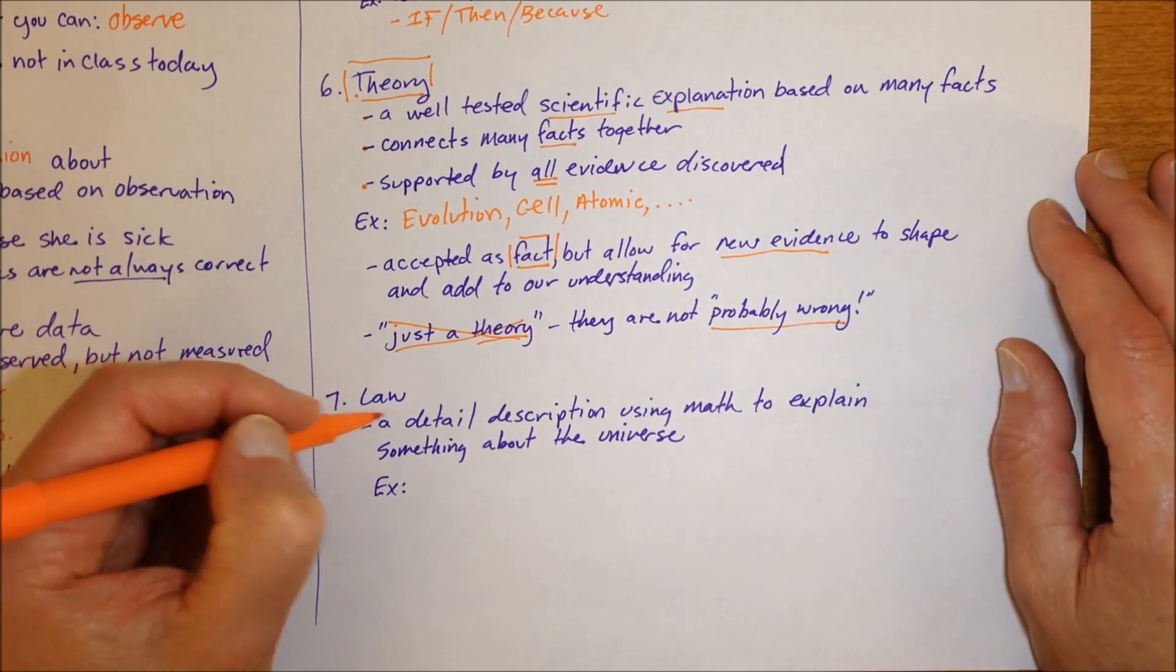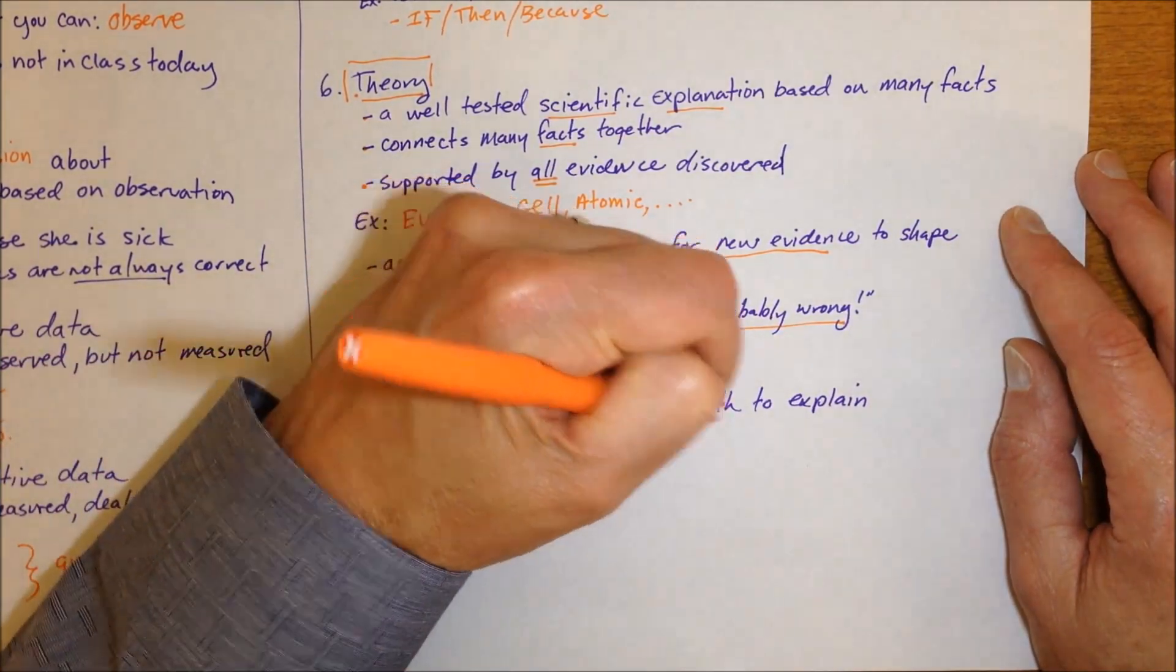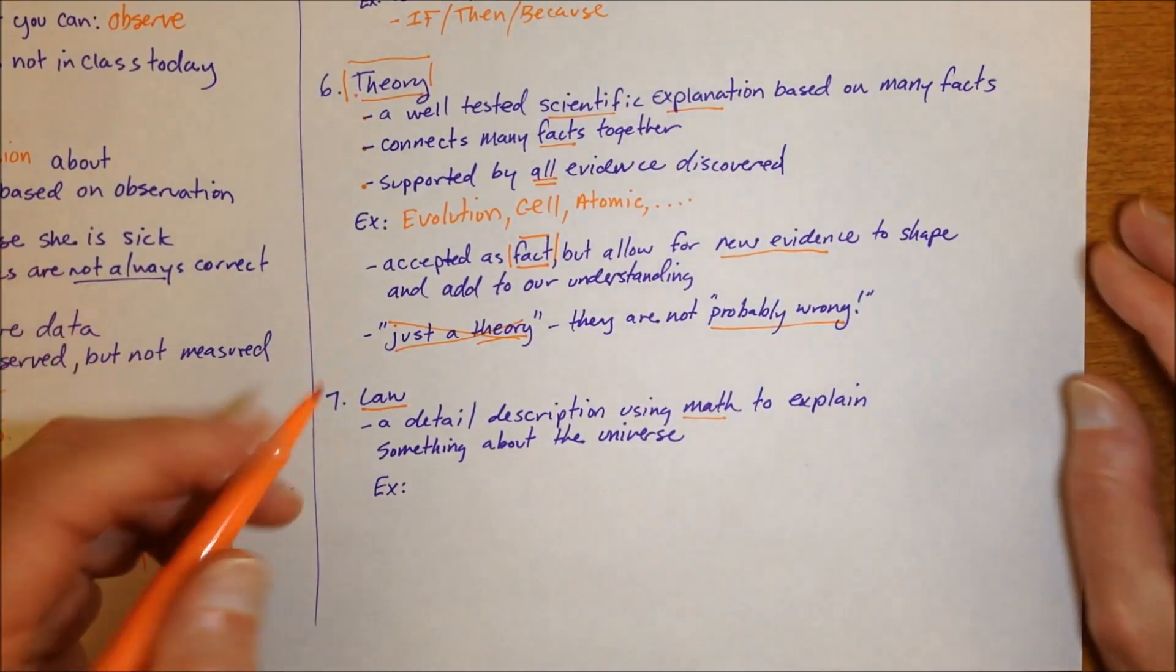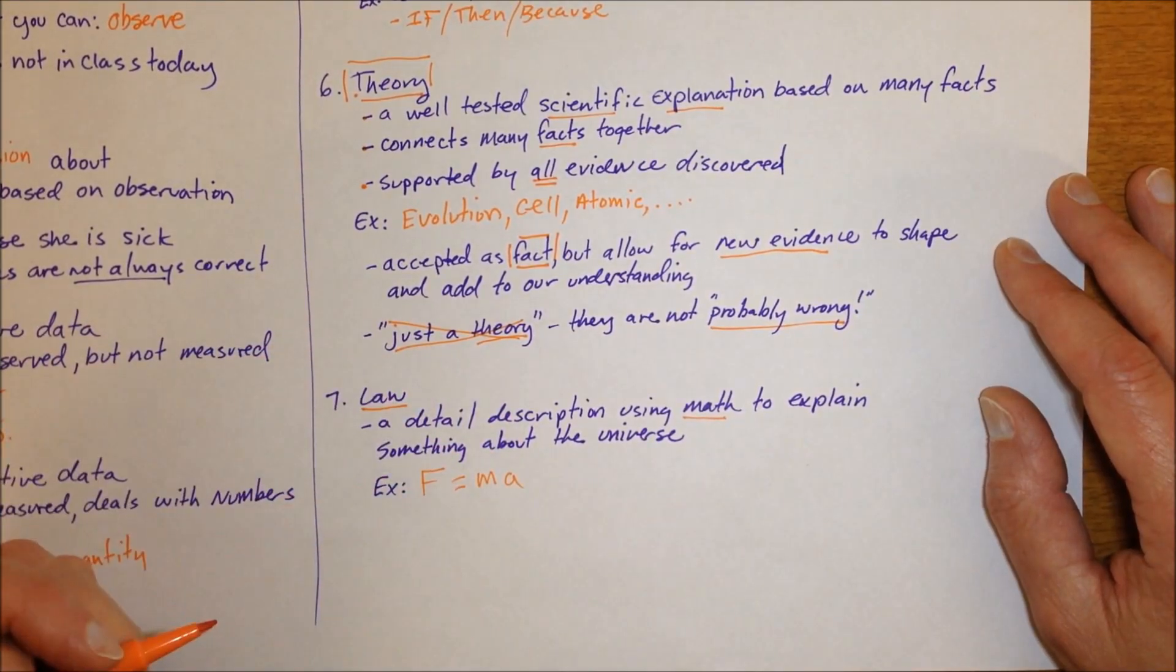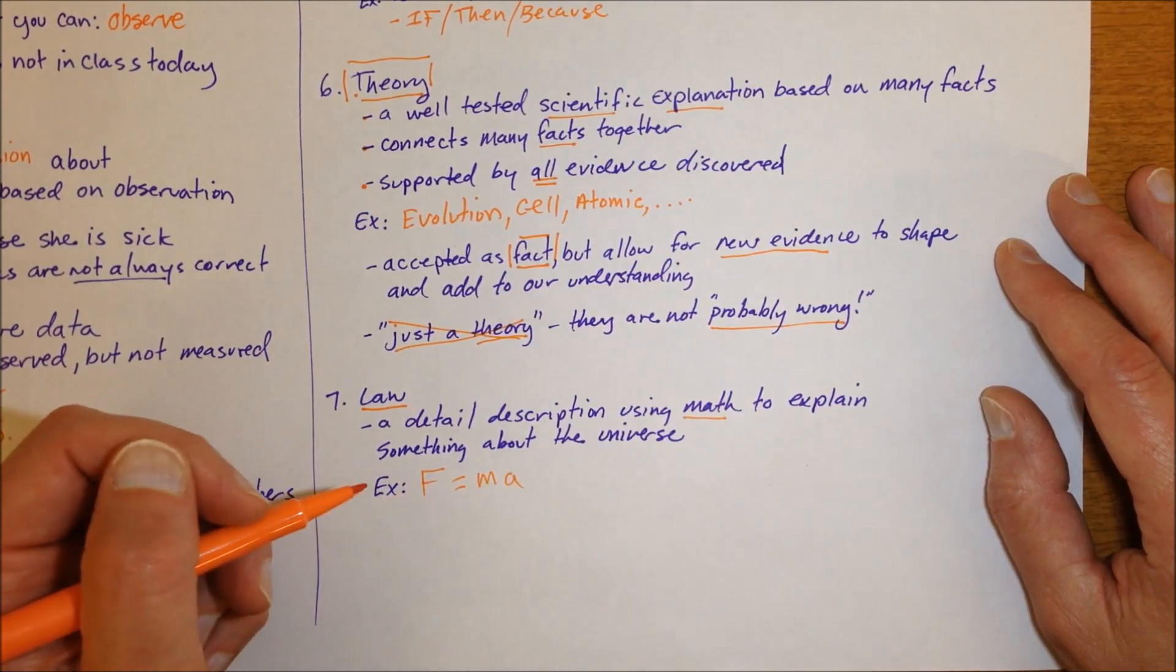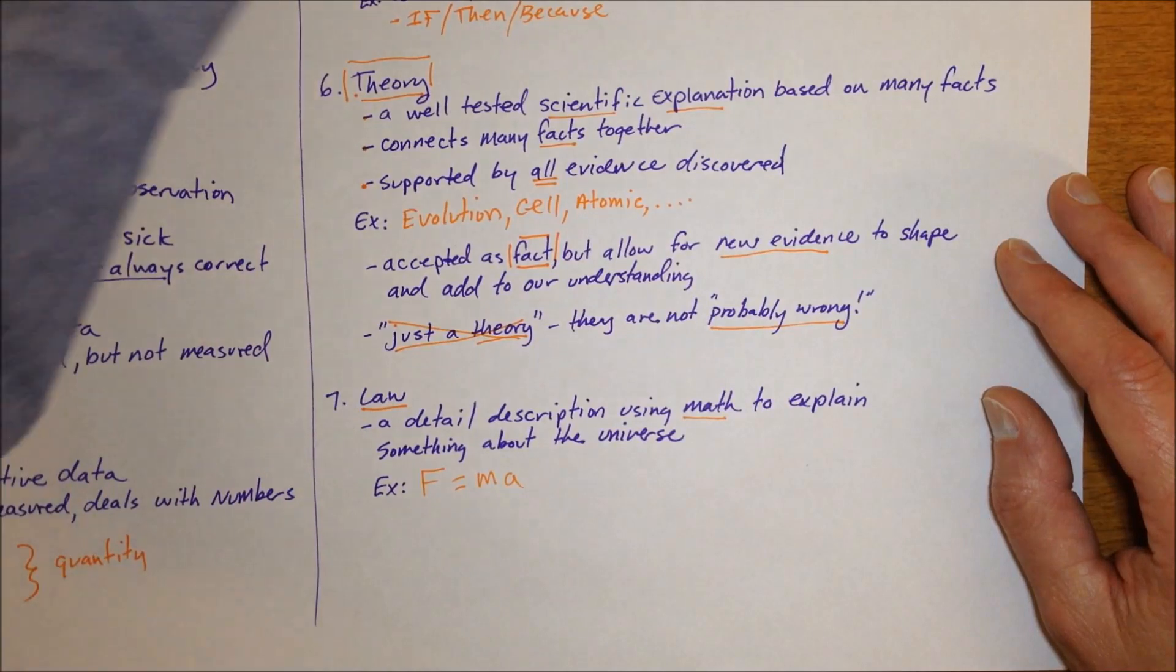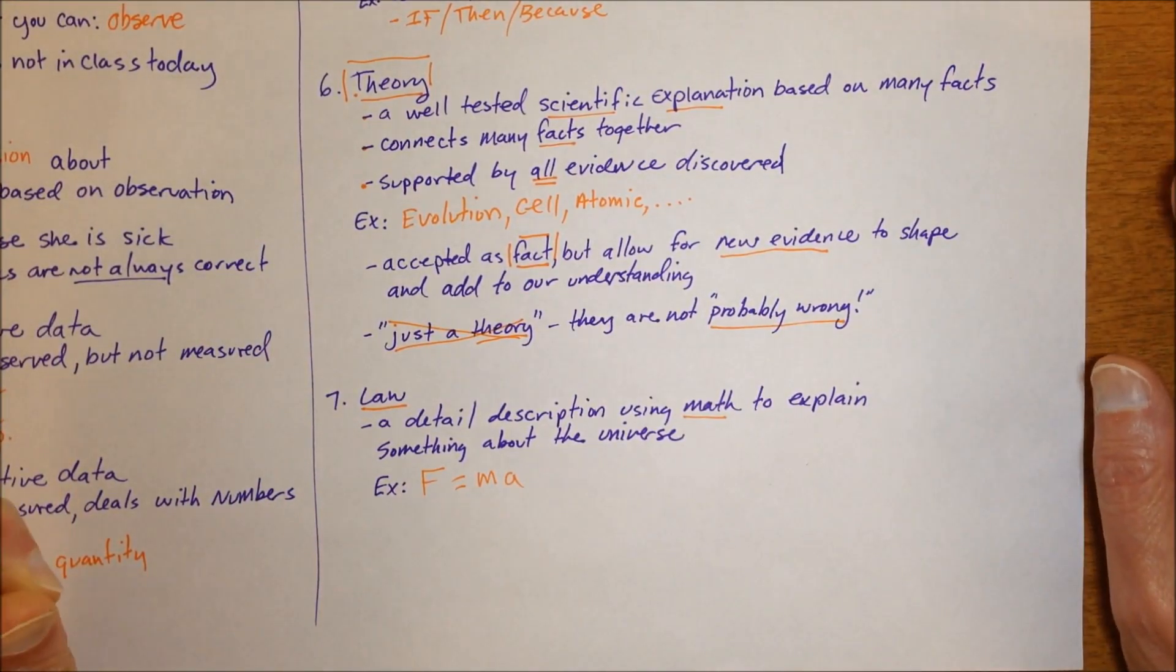Finally a law which we won't see much this year but is a detailed description of something about the universe that uses math to kind of calculate or as part of that explanation. So for example Newton's law of motion force equals mass times acceleration explains the amount of force you have to add to something in order to get it to move or the law of gravity allows us to calculate the speed of an object moving towards the center of the earth. That's it.